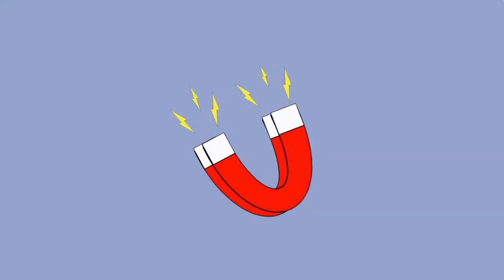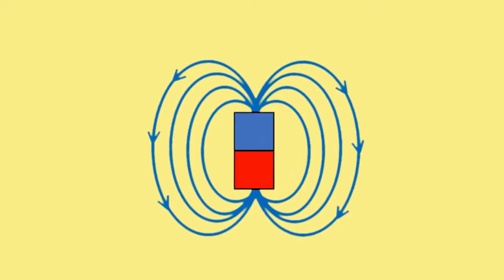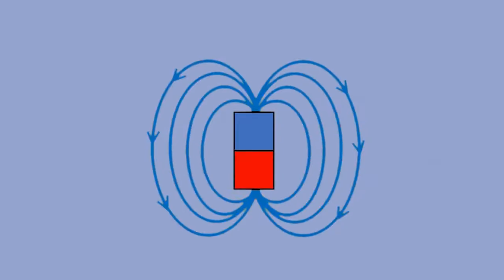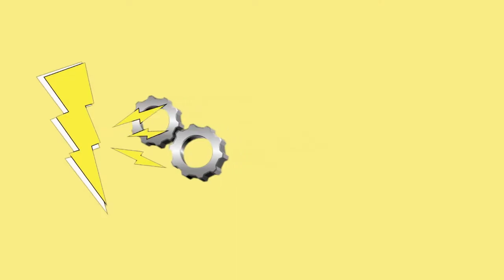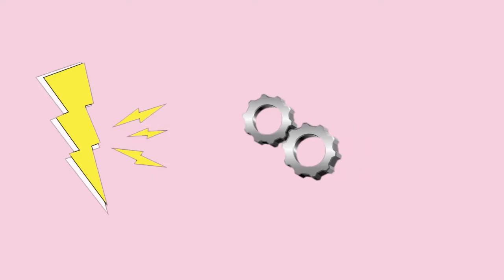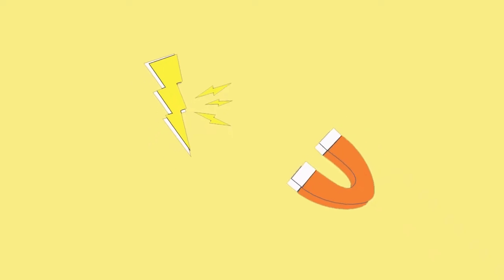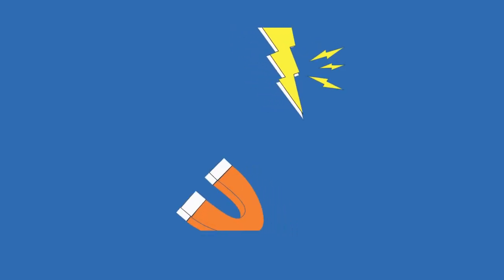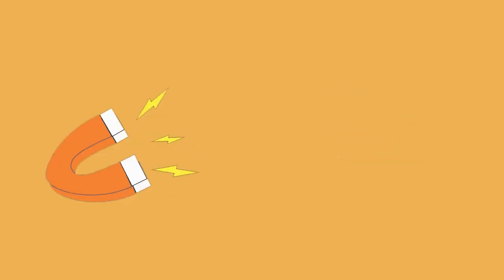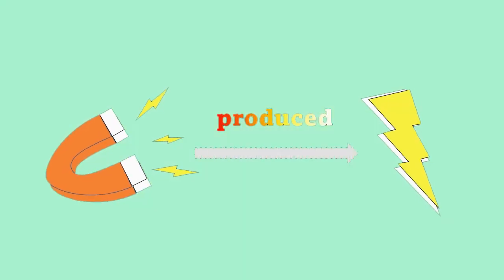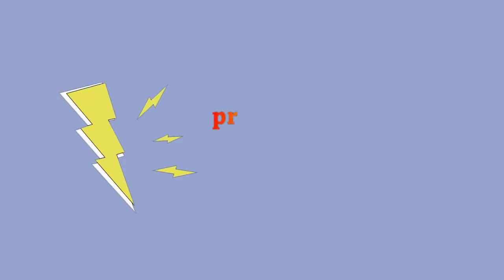Magnets produce magnetic fields that attract metals. Electricity can be used to make a temporary magnet. Electricity and magnets are closely related. Magnets can produce electricity, while electricity can produce magnets.